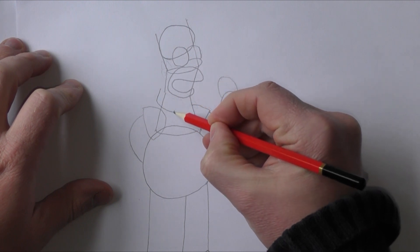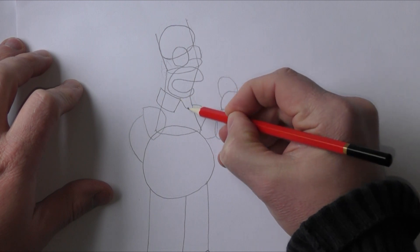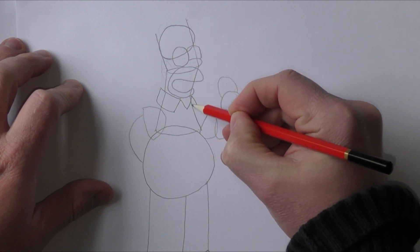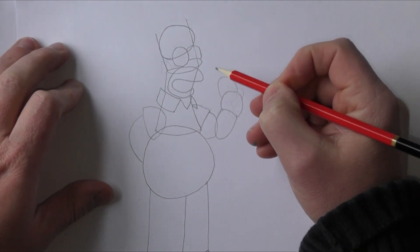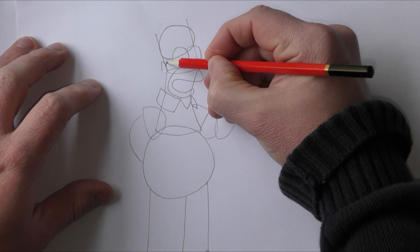Now we're just going to draw Homer's collar on for his shirt. So this is his standard shirt that he always wears, his white shirt. There we go.